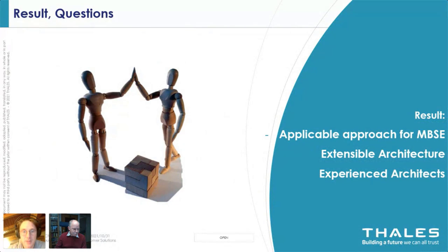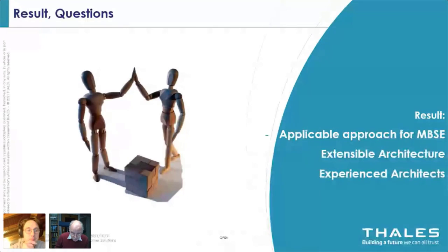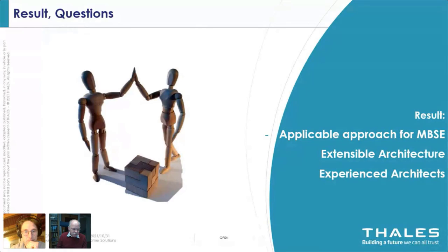Question: You said you had over 3,000 textual requirements. How many model elements did you end up with? Answer: I don't know the exact number, but I would expect the whole model — across all the operational, logical, and physical architecture views used, plus the small amount of system architecture — to have between 1,000 and 2,000 elements. I didn't count it, but I will try to get the number. I would say it's the same order of magnitude as the requirements.